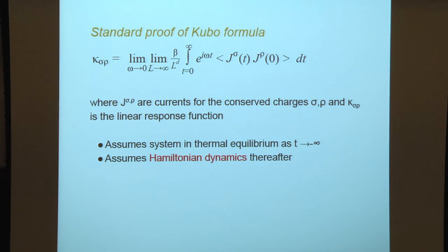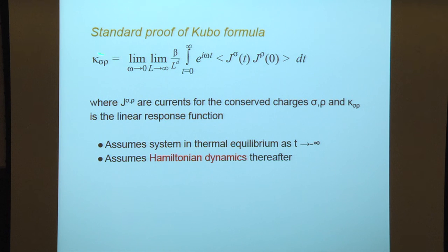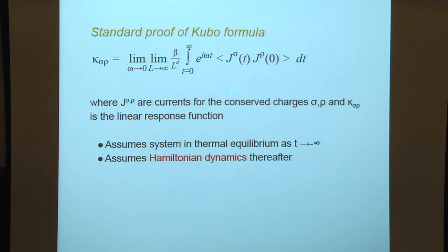The standard proof of the Kubo formula derives a transport coefficient, which relates to transport of some conserved quantity, obtained in terms of the linear response — in terms of the equilibrium correlation function between the corresponding currents. So if sigma and rho are two conserved quantities, and j_sigma and j_rho are the corresponding currents, then you calculate this correlation function, take the limit as omega goes to 0 in this way, and this gives you the linear response.